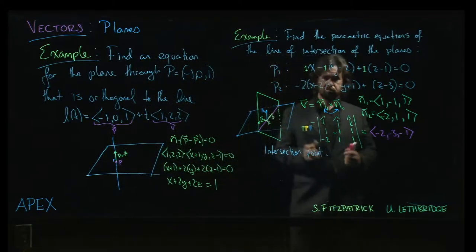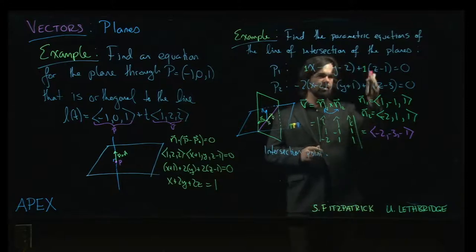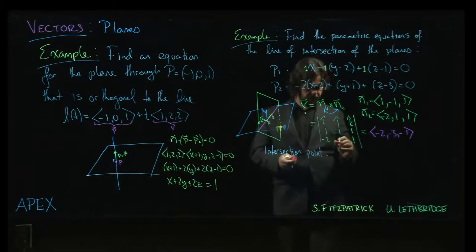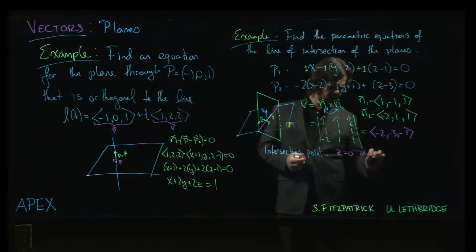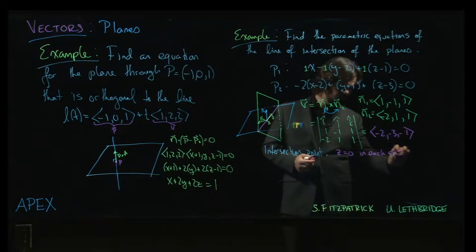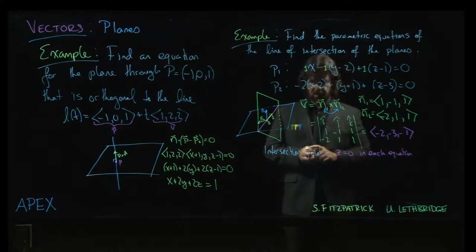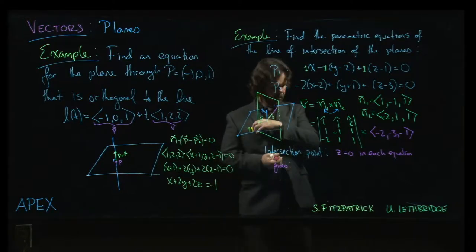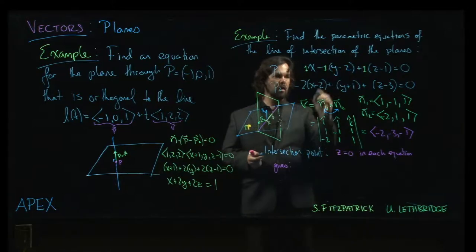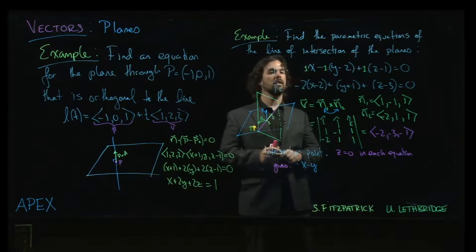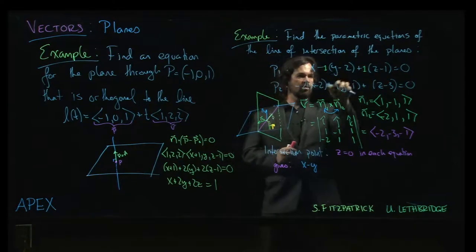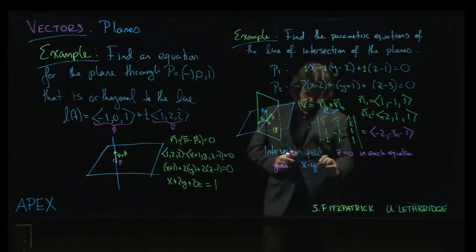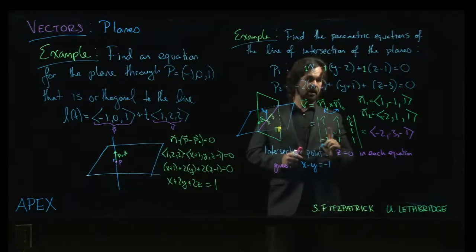So what the textbook does is the textbook solves both equations for Z and then equates the resulting X and Y terms to each other, which gives us an equation involving X and Y. It's one way you can do it. Another way you can do it is just say, set Z equal to 0. We can do that. So Z equals 0 in each equation gives us, in the first equation, X minus Y, and I'm going to move the constant terms over to the other side. Minus minus 2, plus 2, minus 1. There's a plus 1 on this side. I'm going to bring that over. So with Z equal to 0, I get minus 1 there.